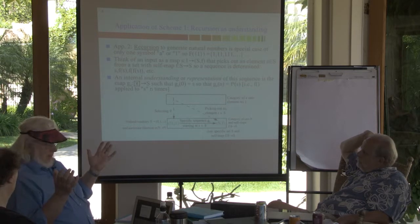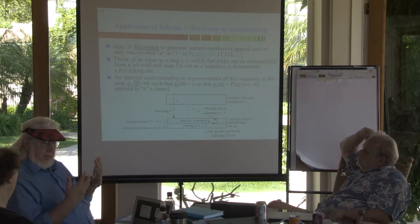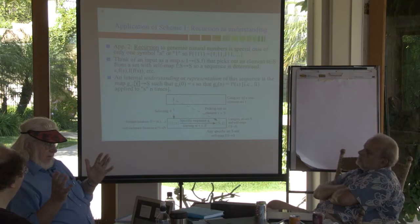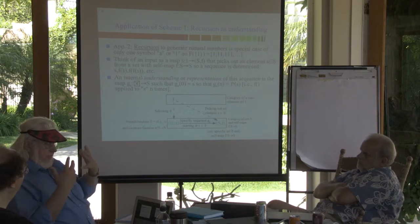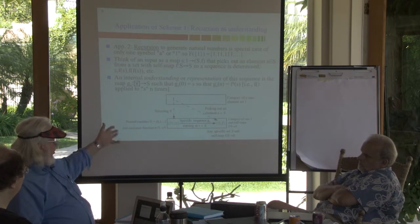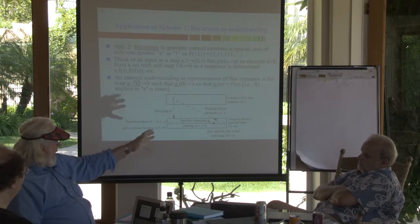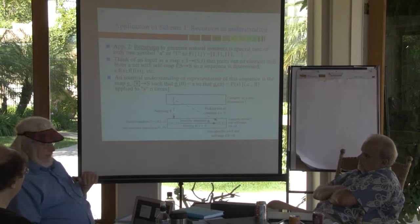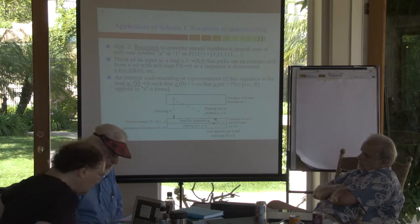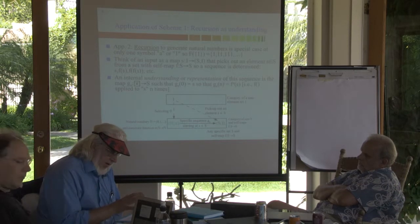When you understand something, it basically boils down in this ultra-simple model to finding that map — understanding the sequence of things that came in as a recursion. You get a bare-bones mathematical model of what it means to internally understand something using this human capability of recursion. A sentence structure may have recursion built into it. Rather than just being a random sequence of sounds, when you get this mapping, it's understood in terms of your internal structure, represented by the natural numbers.